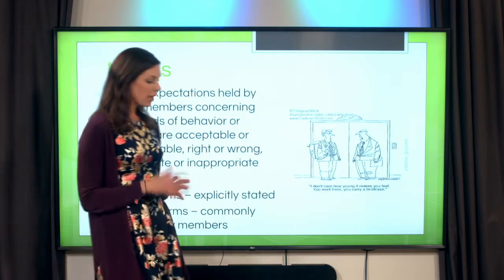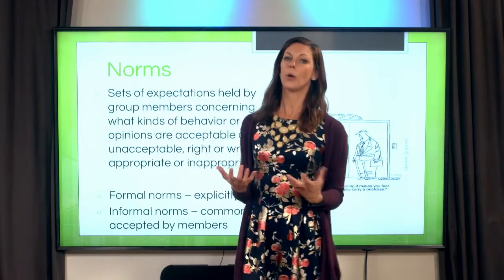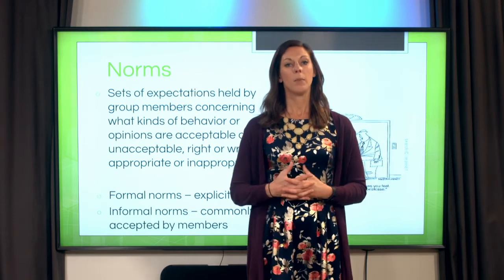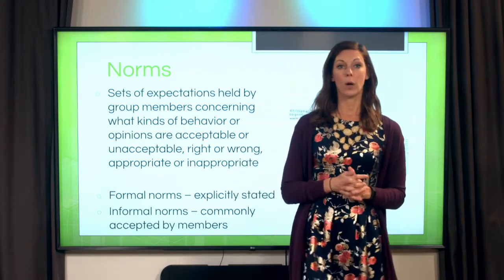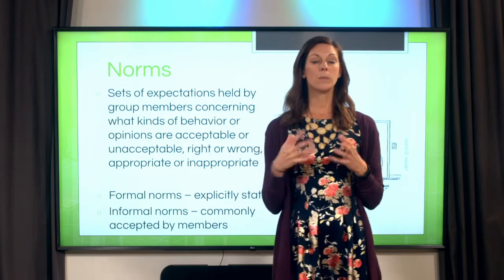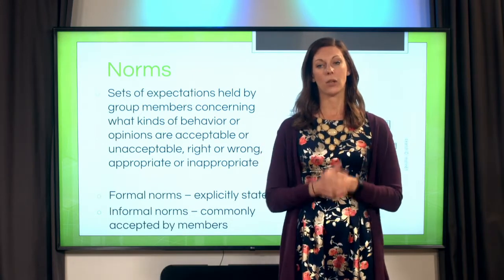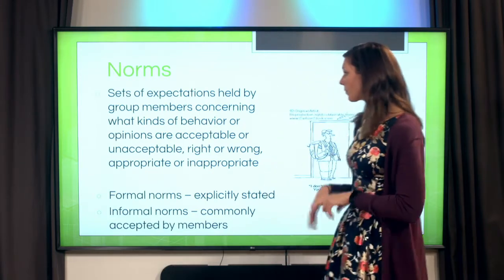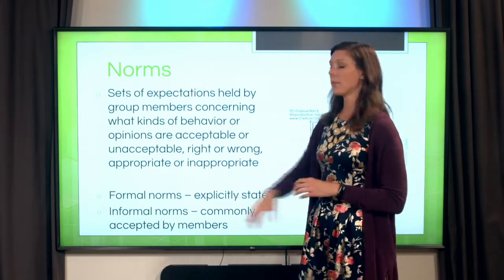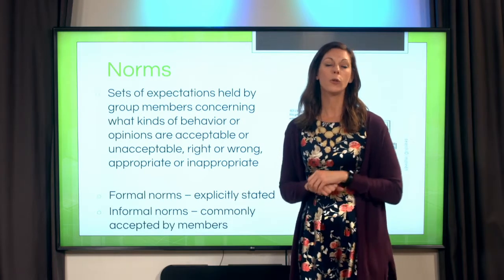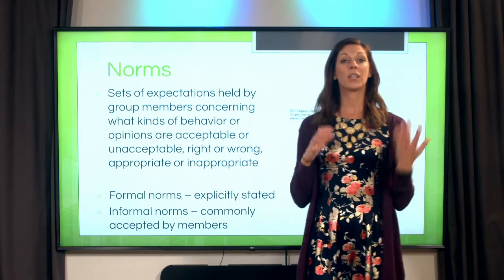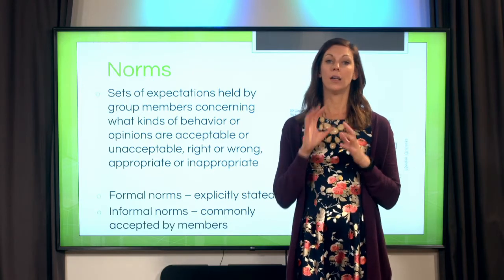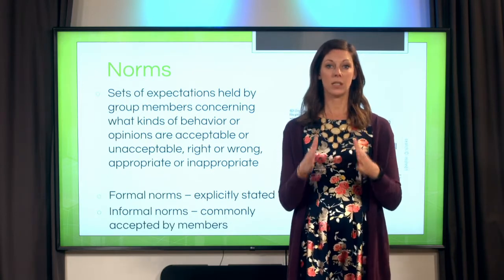In addition to roles in a group — whether it's a work group, a team, or a social group — you also start to develop some norms. Norms are the expected behaviors of that particular group, and they are particular to every group and team you are a part of. We have two types of norms. First are formal norms: those are things that are explicitly stated, written down in a rule book or on a piece of paper.